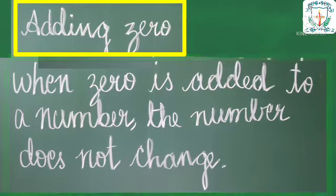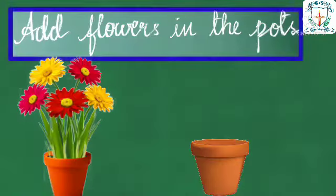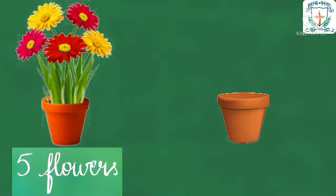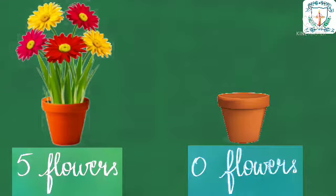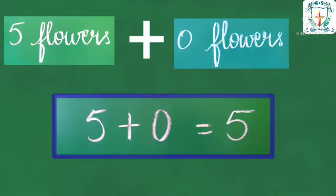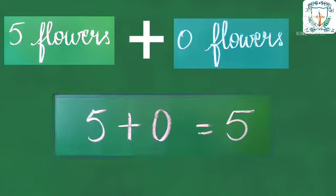Examples: Add flowers in the pots. There are 5 flowers in the first pot and no flowers in the second pot, that is 0 flowers. When we add 5 plus 0, we get the answer as 5. So 5 plus 0 is equal to 5.